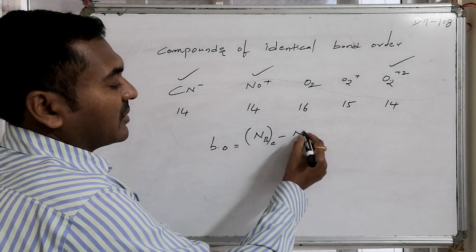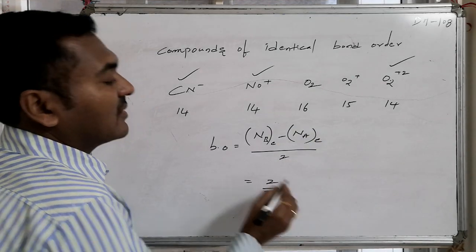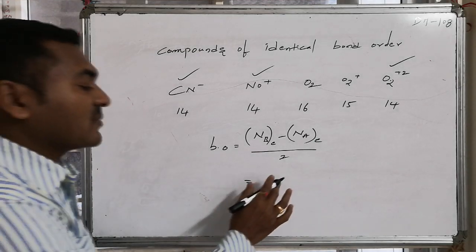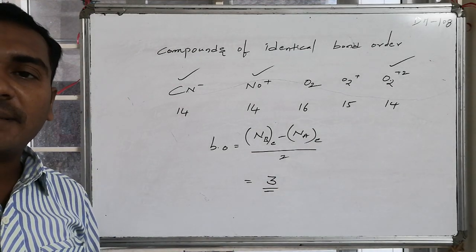Net number of bonding electrons by 2. In this case, that particular value, as it is 14, is found to be 3. Bond order is found to be 3.